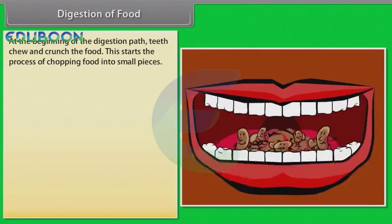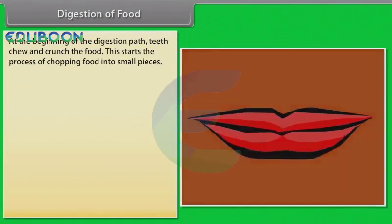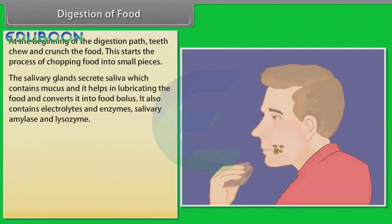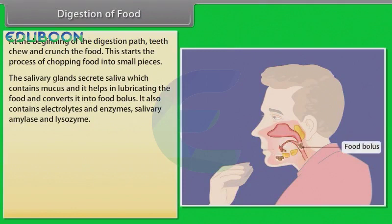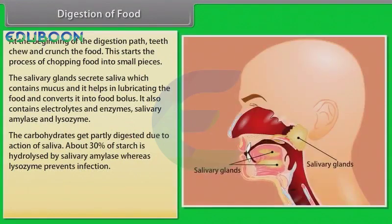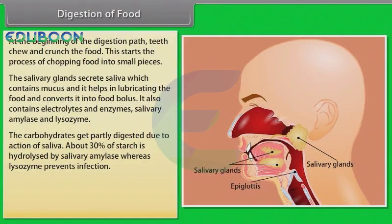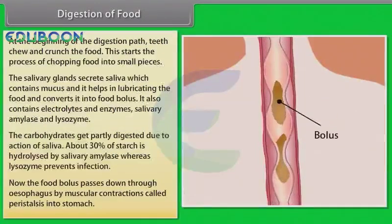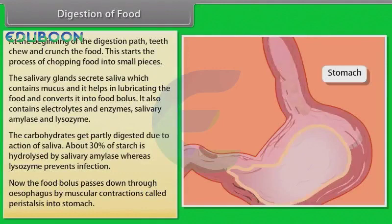At the beginning of the digestion path, teeth chew and crunch the food, starting the process of chopping food into small pieces. The salivary glands secrete saliva, which contains mucus that lubricates the food and converts it into a food bolus. Saliva also contains electrolytes, salivary amylase, and lysozyme. About 30% of starch is hydrolyzed by salivary amylase, while lysozyme prevents infection. The food bolus then passes down through the esophagus by muscular contractions called peristalsis into the stomach.